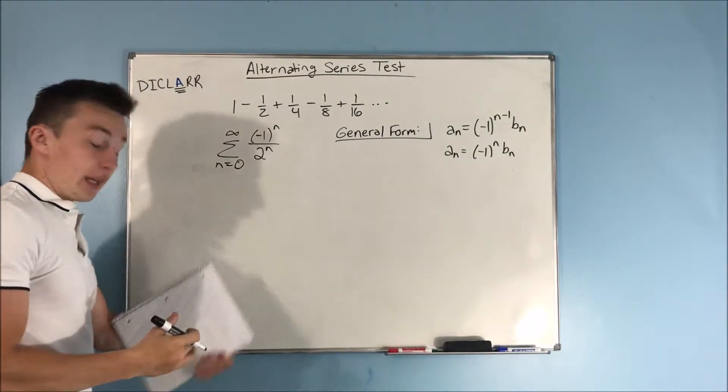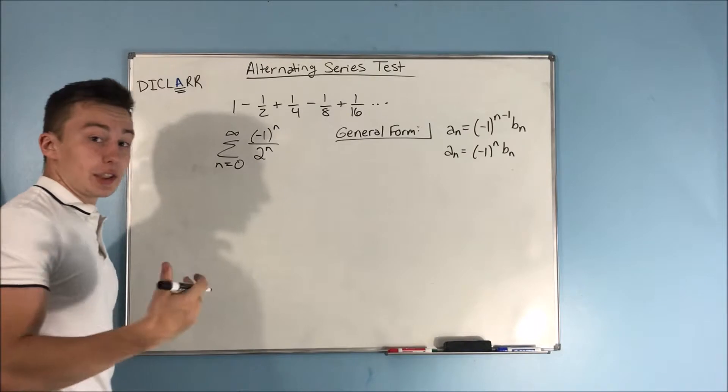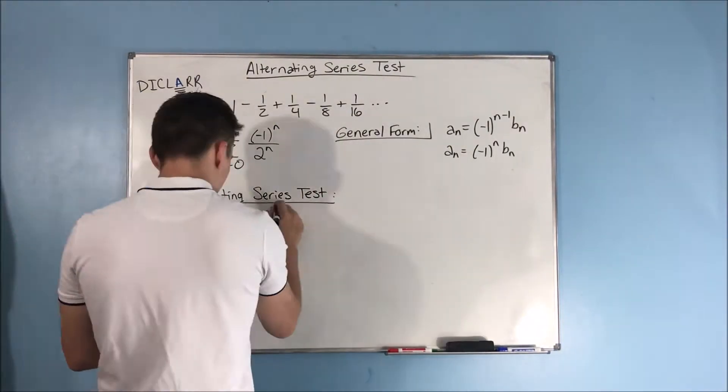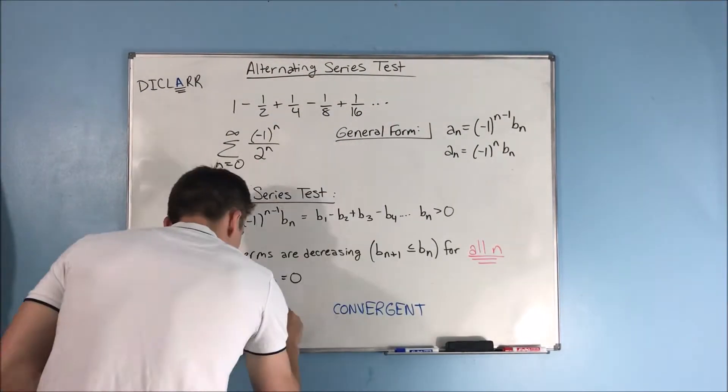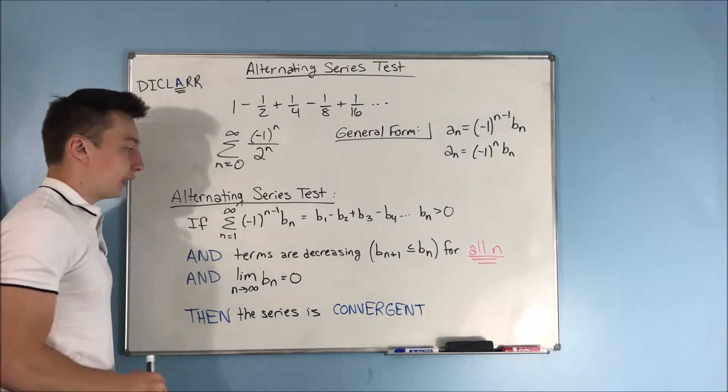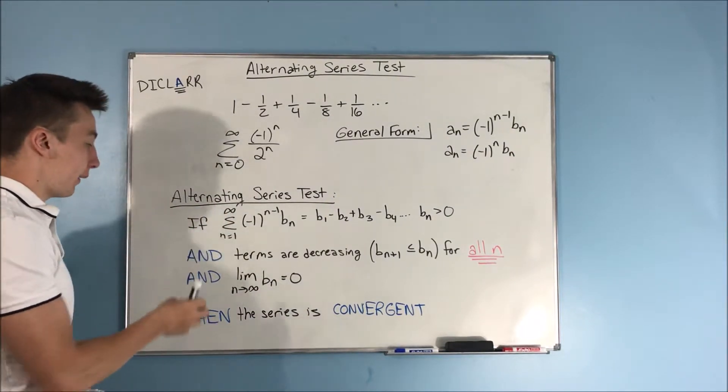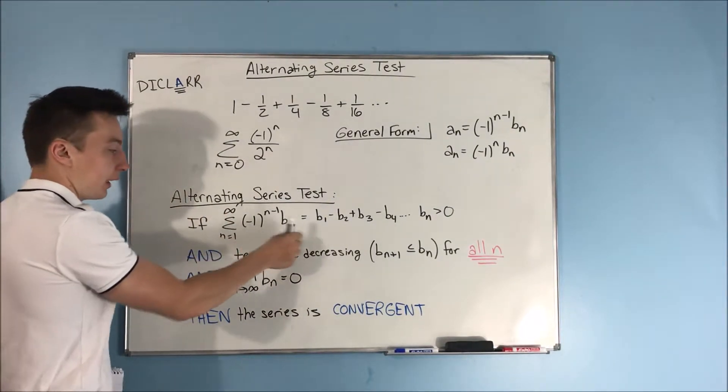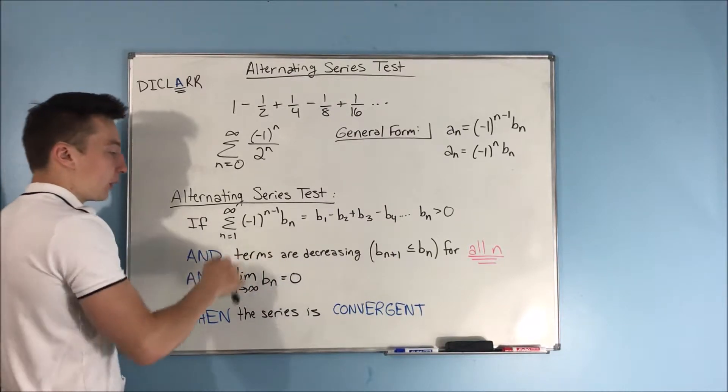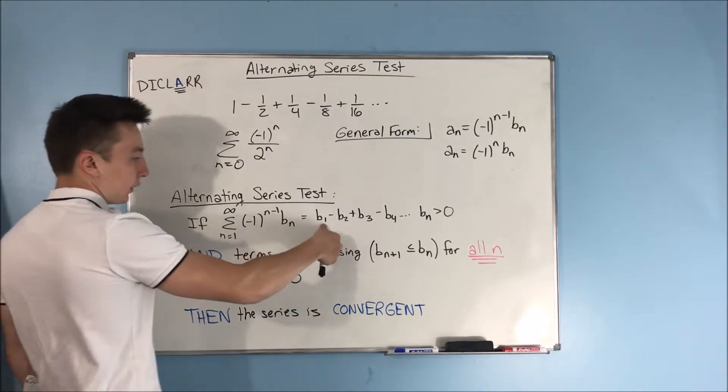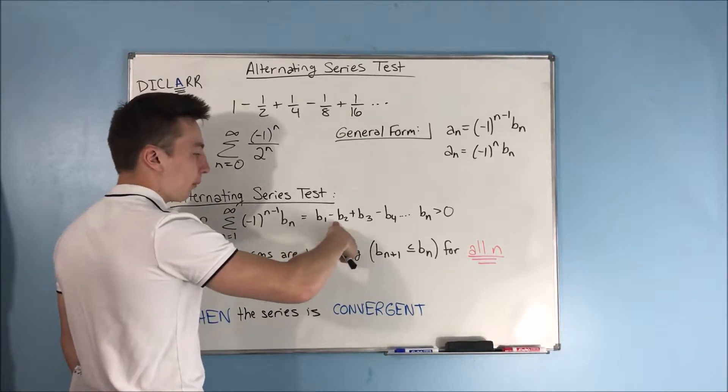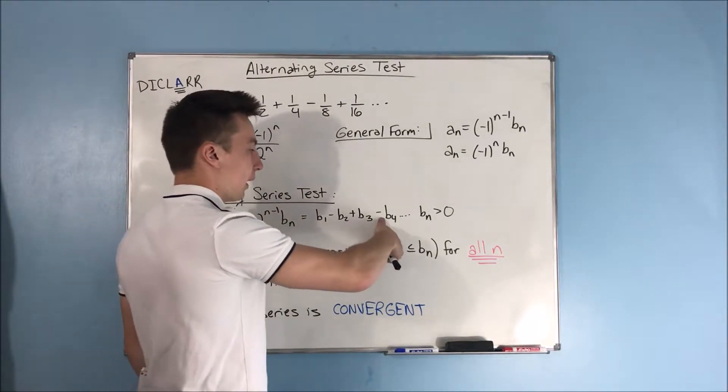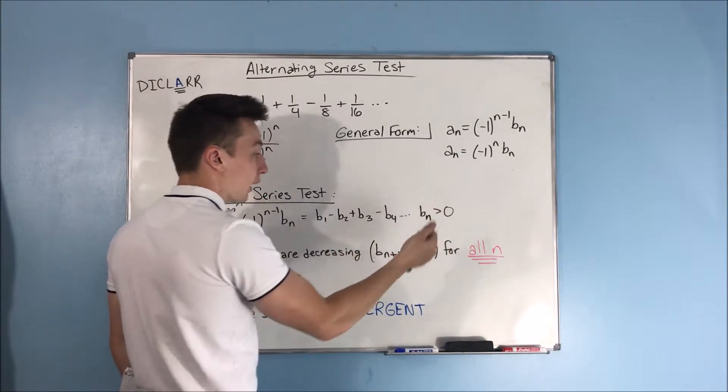Alright, so now we can get into what the alternating series test actually says. So, here is the alternating series test in its entirety. So, if we have that alternating series here, negative 1 to the n minus 1 times b sub n, where you get that alternating b sub 1 minus b sub 2 plus b sub 3 minus b sub 4, and on and on and on.